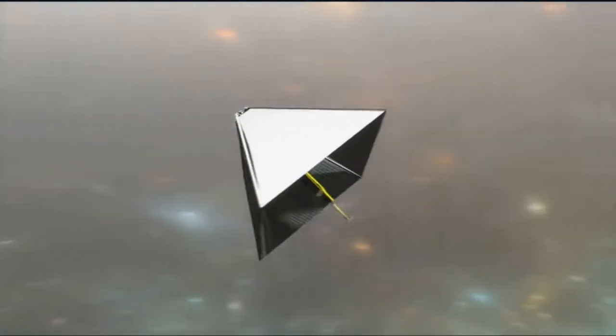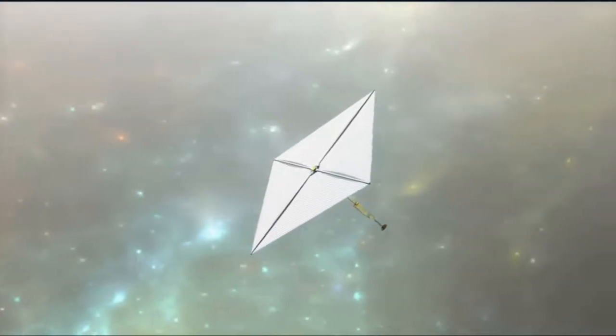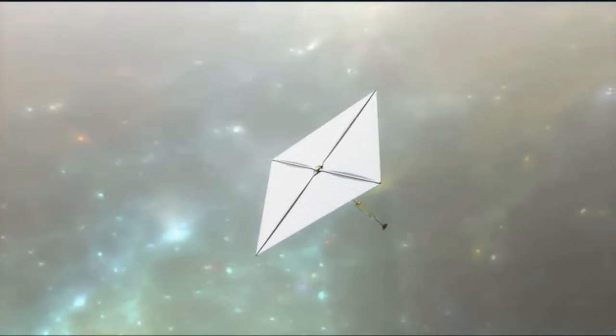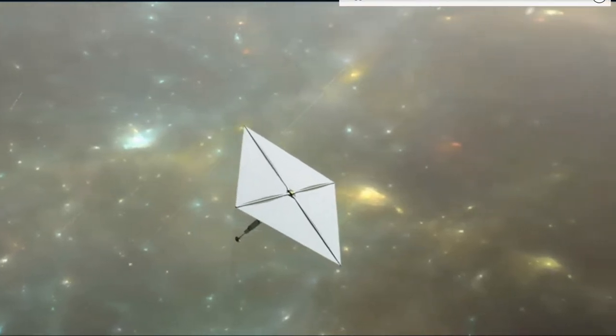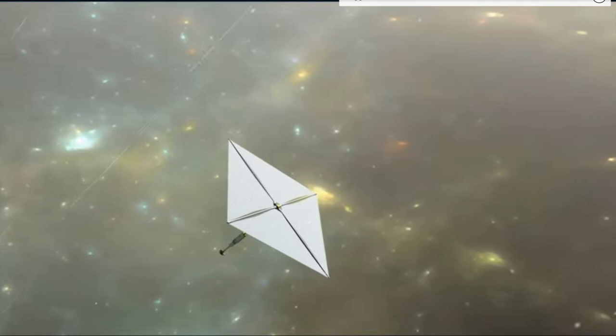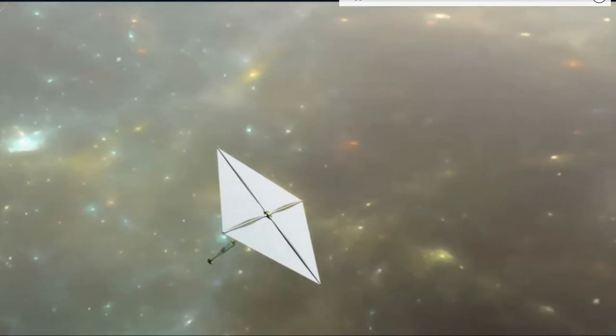In summary, solar sailcraft require active attitude control systems to achieve desired orientations. They have a diverse range of applications, from inner to outer planets, as cargo haulers and for trajectory corrections, showcasing their potential to revolutionize space exploration and satellite operations.